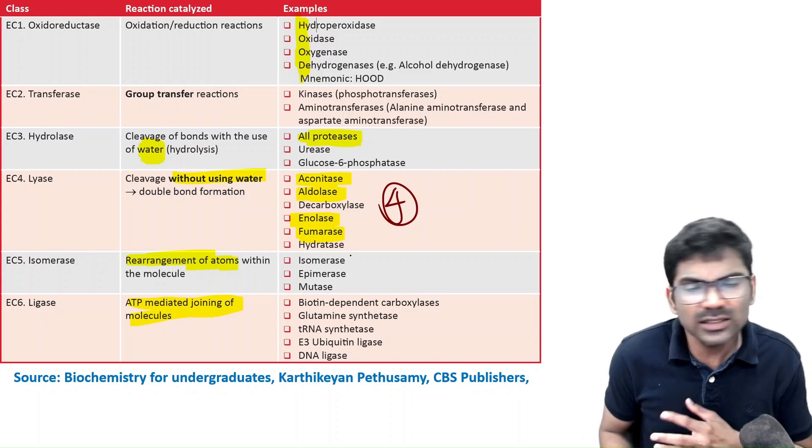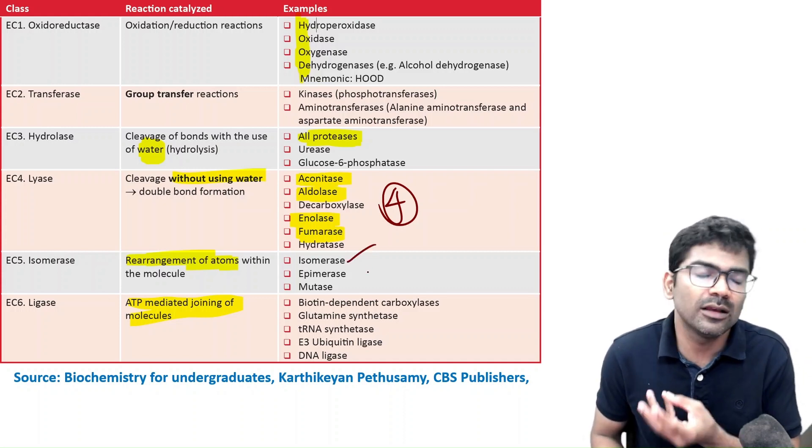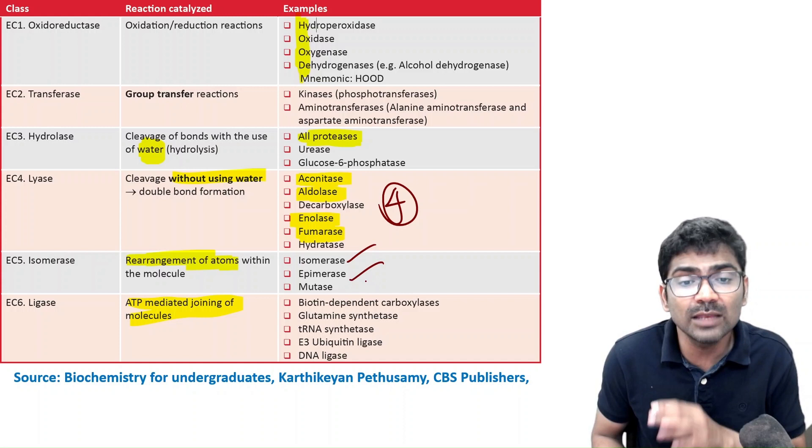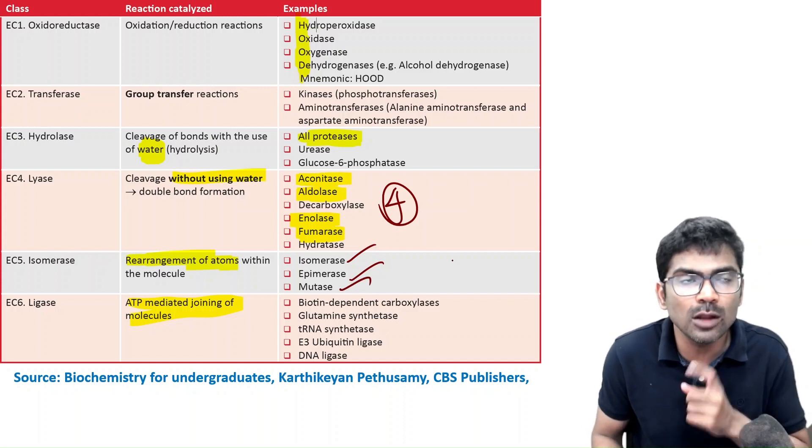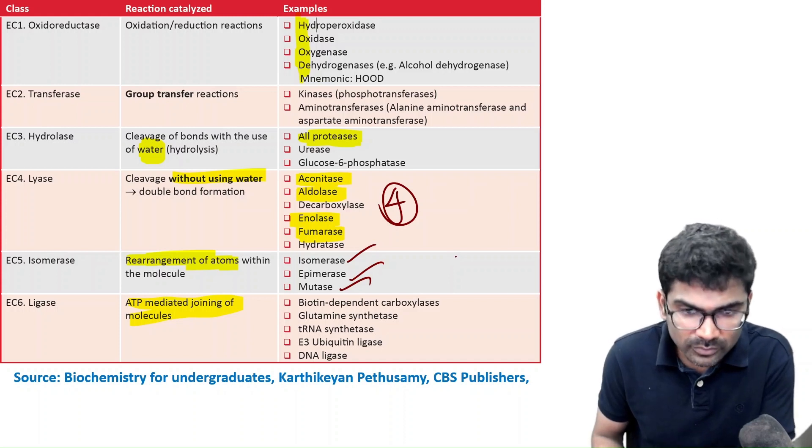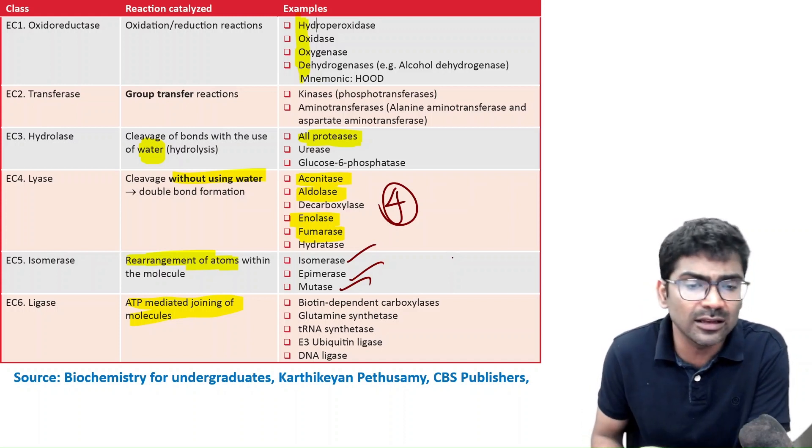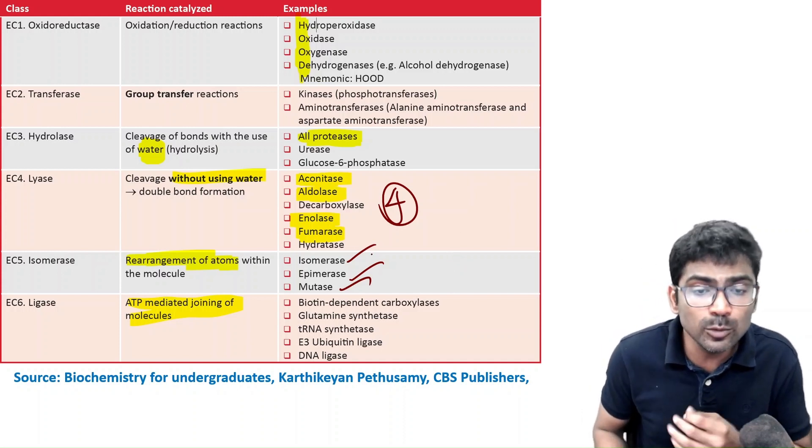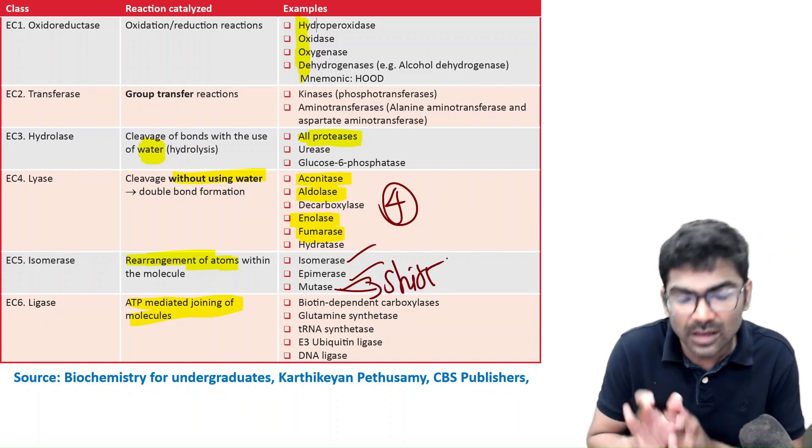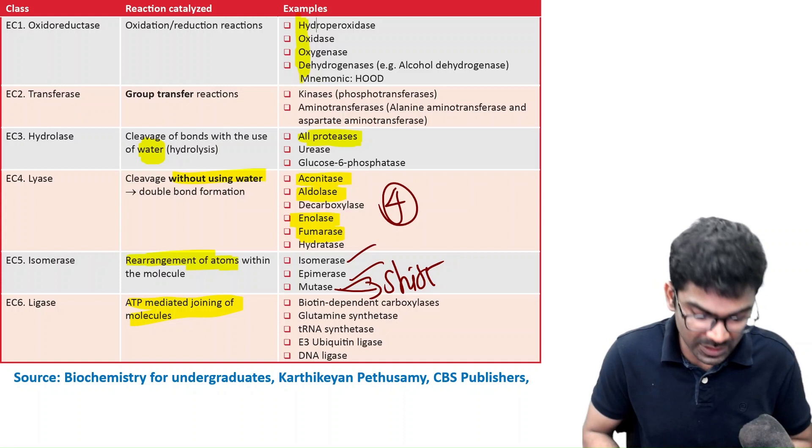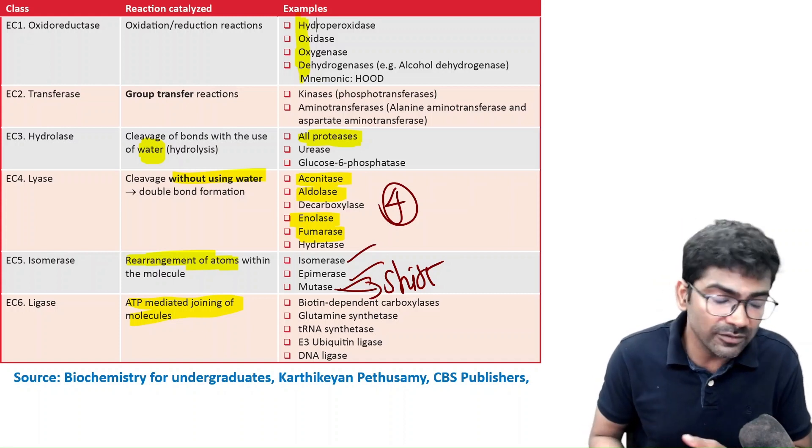Whereas, look at this. Isomerase, it is very simple. The name will be isomerase or epimerase. Epimers are type of isomers. Mutase is going to shift one group from a particular carbon to another carbon. So, that is mutase. Mutase is going to shift. We will discuss all these things in further videos.